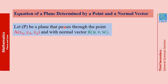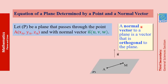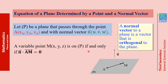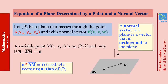P is a plane that passes through point A and having N as a normal vector. A normal vector to a plane is a vector that is orthogonal to the plane. This is plane P — it passes through point A and it's orthogonal to N. If we choose any point M on the plane, AM and N would be orthogonal, and consequently their scalar product would be equal to 0. So N dot AM equals 0 is a vector equation of P.